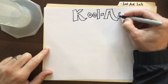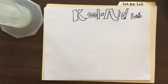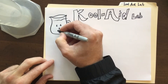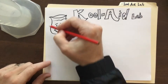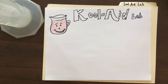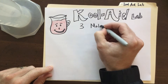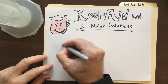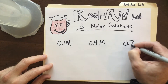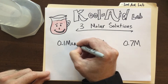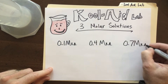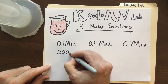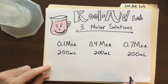Hello chemistry folks, we have the Kool-Aid lab here. You've probably all had Kool-Aid and wondered, what is the molarity of this? Well, that's what we're going to figure out. We are going to take three different molar solutions from weak to strong — we'll use Ka to stand for Kool-Aid — and we're going to go ahead and taste test these. We will make 200 milliliters of each one of these solutions.